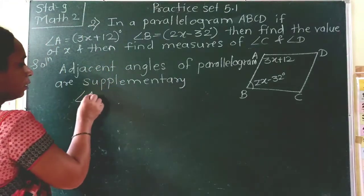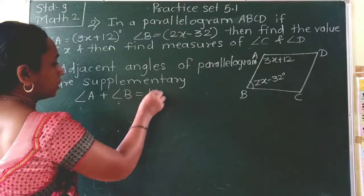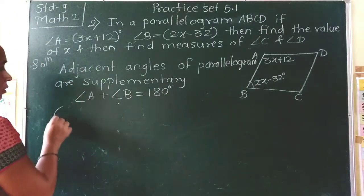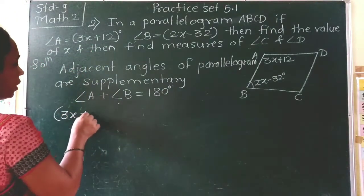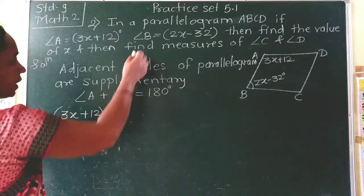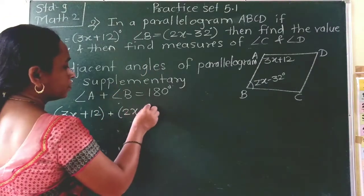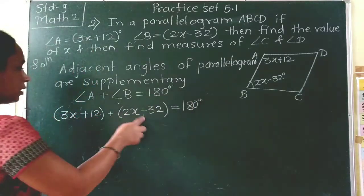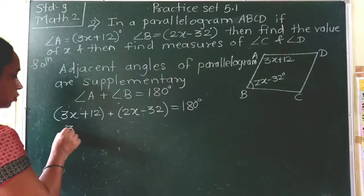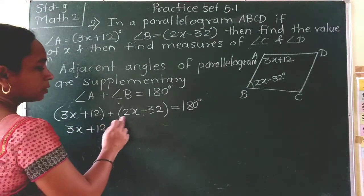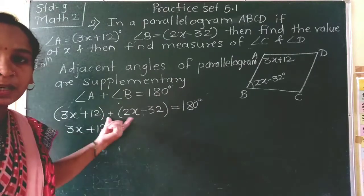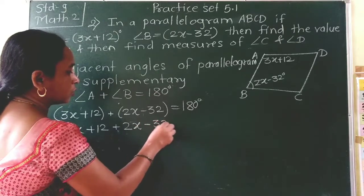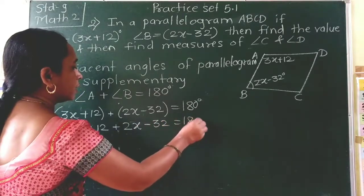So angle A plus angle B equals 180 degrees. The value of angle A is 3x plus 12, and the value of angle B is 2x minus 32, and their sum equals 180 degrees. So: 3x plus 12 plus 2x minus 32 equals 180 degrees.